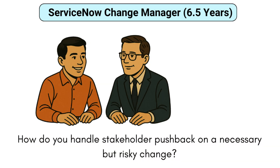How do you handle stakeholder pushback on a necessary change? Yeah, so it happens — this has happened with me as well. In such cases, I first listen to their concerns. Is it about timing? Is it about impact? Or is it about something else? After that, I share detailed information like what testing was done, what rollbacks exist, and what the business benefit of that change is. If after sharing all such information they are still not convinced, I do escalate the matter to the CAB for a decision, put forward the change and its benefits in front of the CAB, and whatever they decide, we follow.